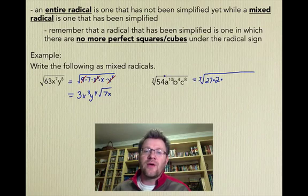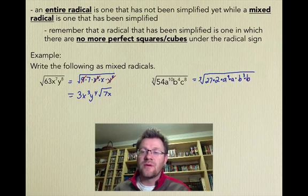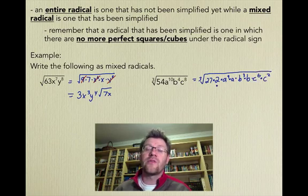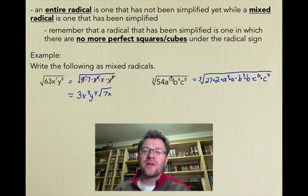a^10 now, we're looking for things that are divisible by 3. So that's going to be a^9 times a. b^4 is going to be b^3 times b. And c^8 is going to be c^6 times c^2. So you need to know your exponent rules as well. Now we take the cube root of things we can.